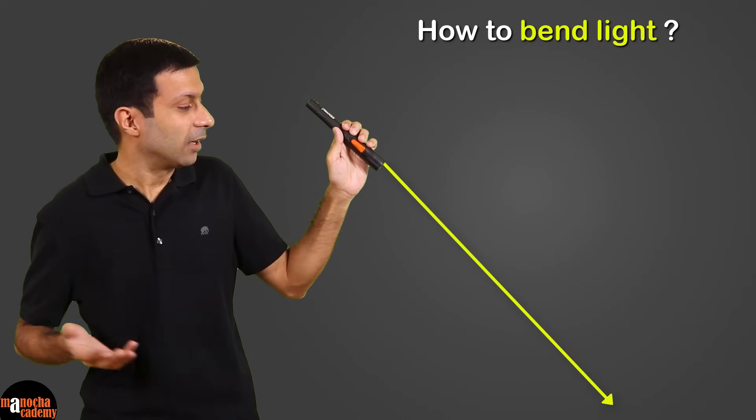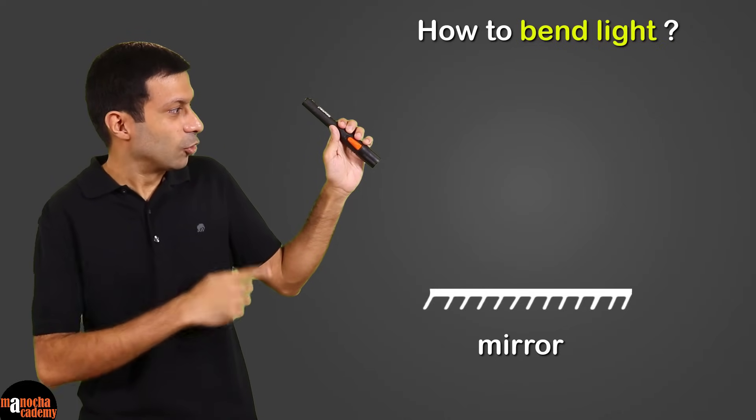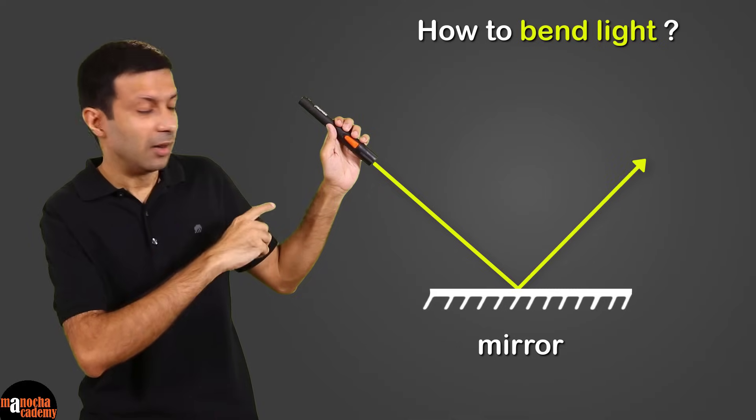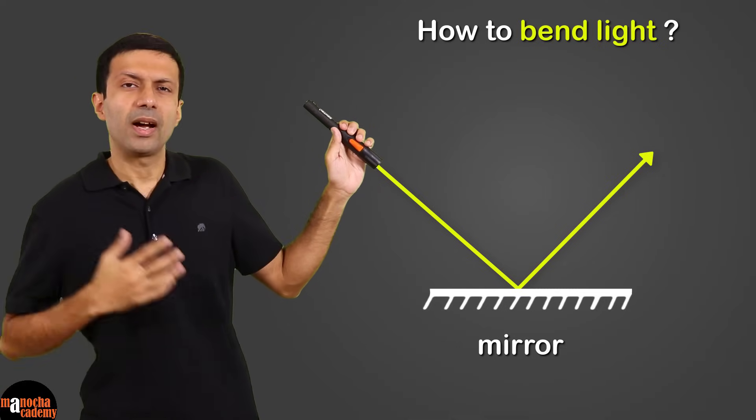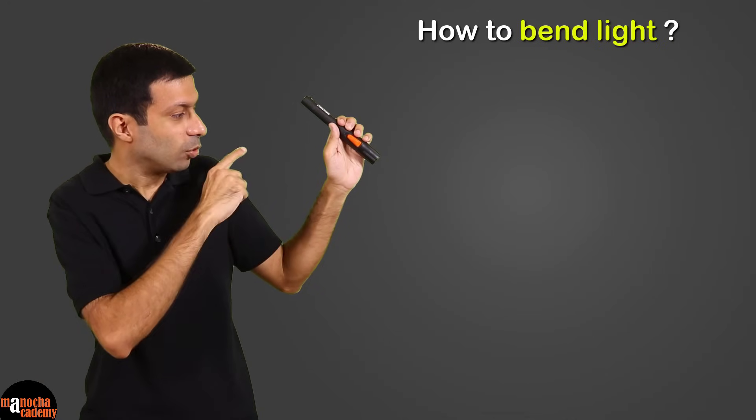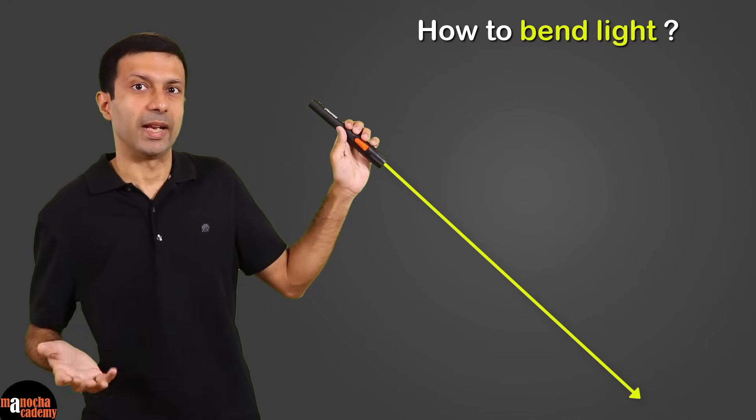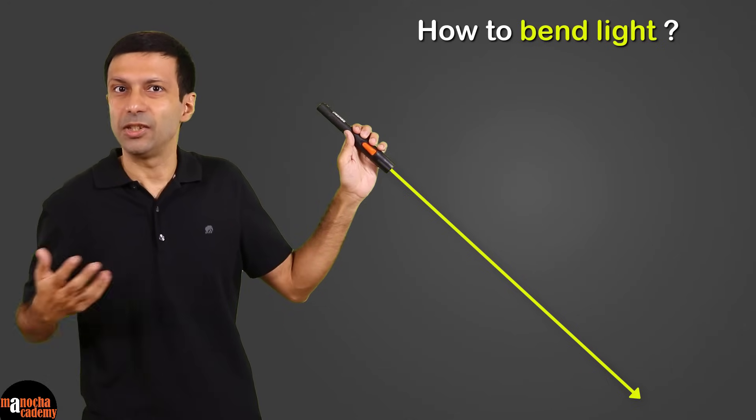You might be thinking of using a mirror. So a mirror certainly changes the angle by reflecting back the light. But what if I ask you, I want the light to continue downwards and still bend it. Then what do we need to do?